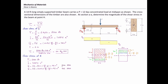The thickness at point K is similar to the first point and is equal to 6 inches. Now plugging the values into the equation: shear force is 6,000 pounds, Q is 42 inches cubed, moment of inertia is 1687.5, and thickness is 6 inches. That gives the shear stress at point K equal to 24.9 psi, which is the final answer.